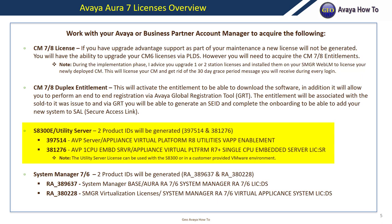The utility server license can be used with the S8300 or in a customer-provided VMware environment. In our environment, we have a robust network, so it made sense to deploy a centralized utility server in our VMware environment. However, in environments with carrier MPLS circuits with limited bandwidth, it made more sense to have local utility servers to perform firmware updates.